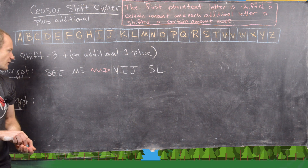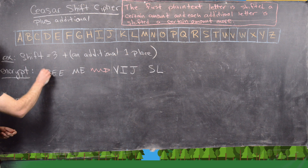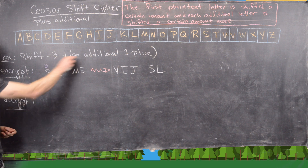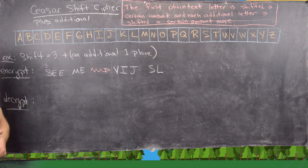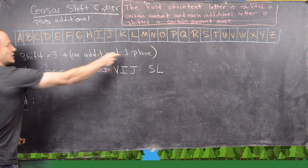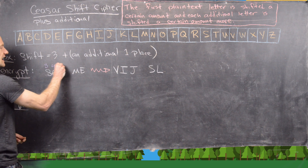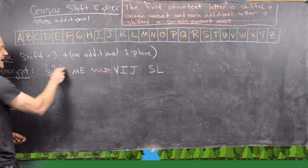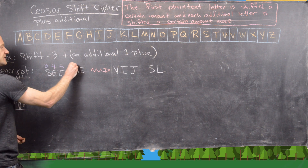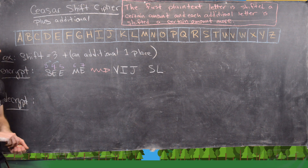To reiterate: the first letter S gets shifted 3 units, then the next gets shifted 4, the next 5, the next 6, and the last 7.